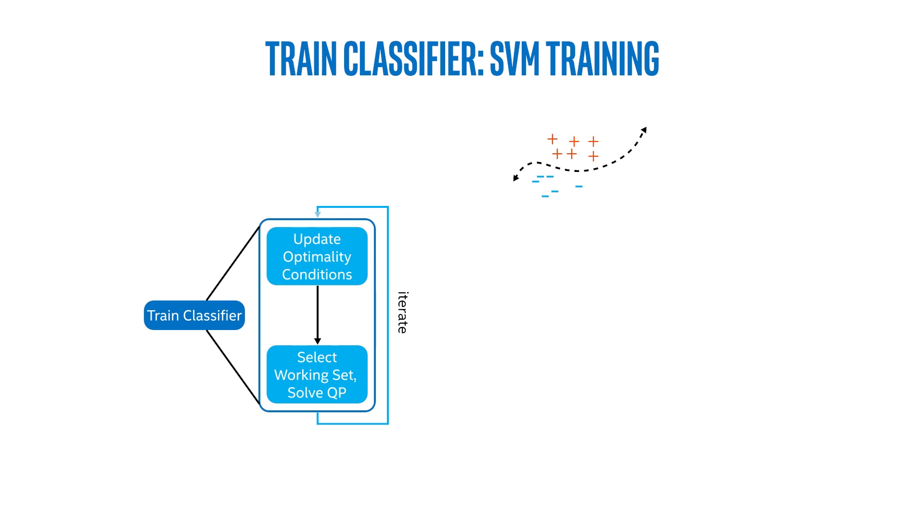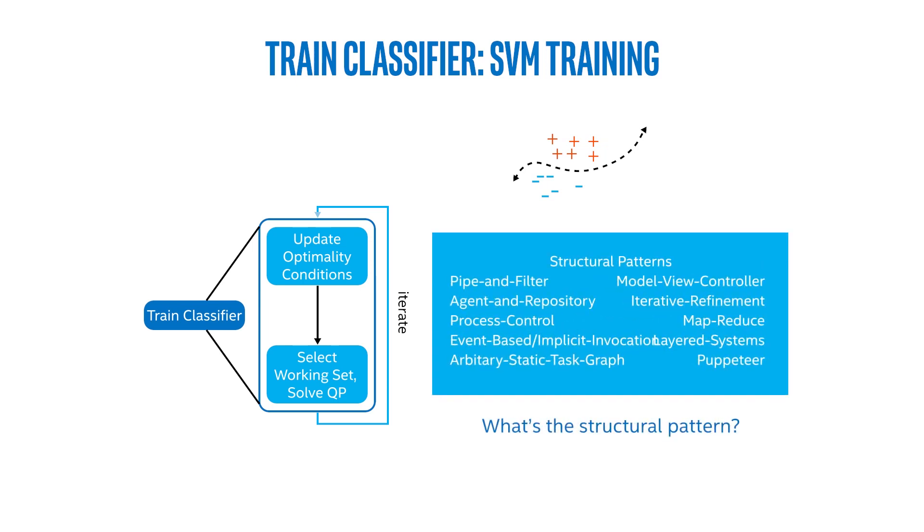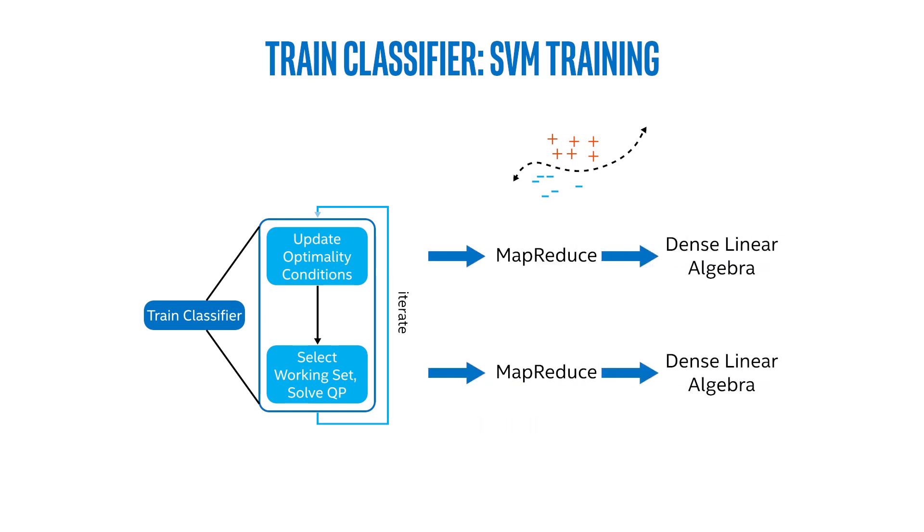Looking next to train classifier, what's the structural pattern of this? Well, it's two, really. At the outer loop, we can see it's iterative refinement. Inside, we can see a simple pipe and filter structure with updating optimality conditions, selecting the working set, and solving the quadratic program. Looking inside each of the filters of the pipe and filter, we see a MapReduce and dense linear algebra for each.